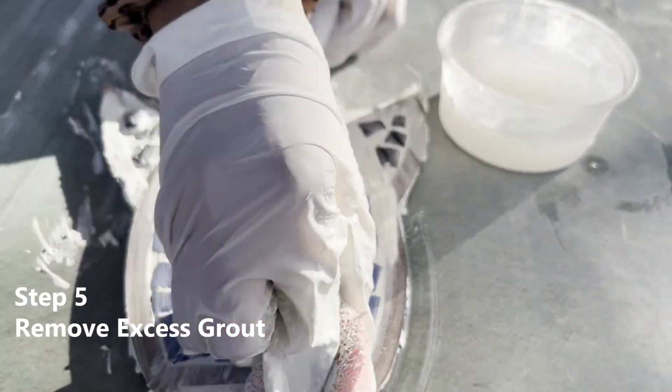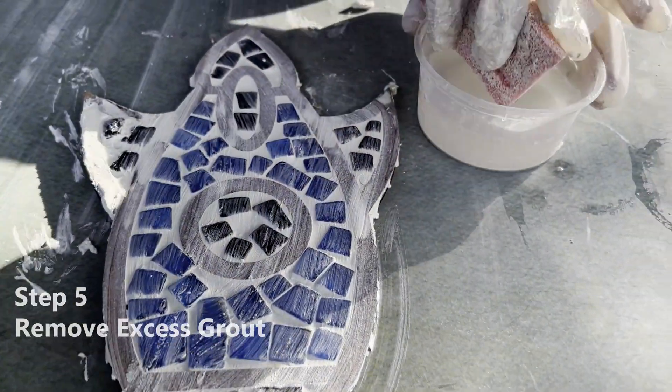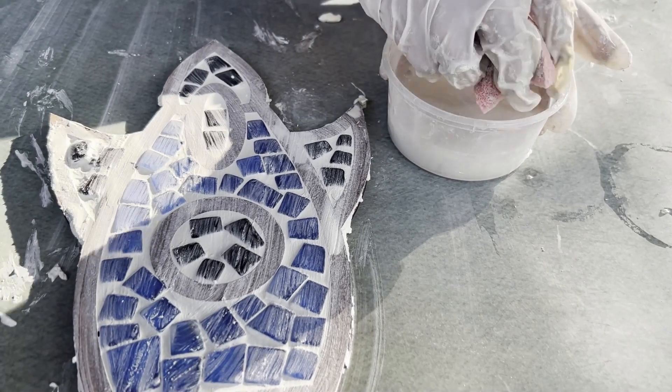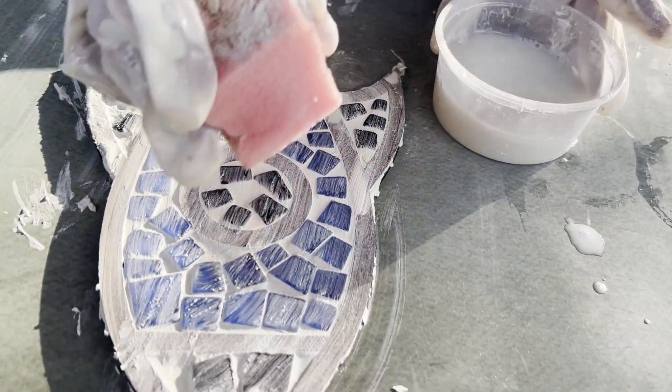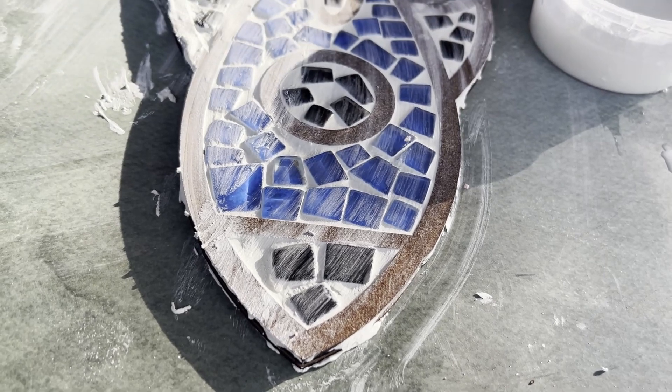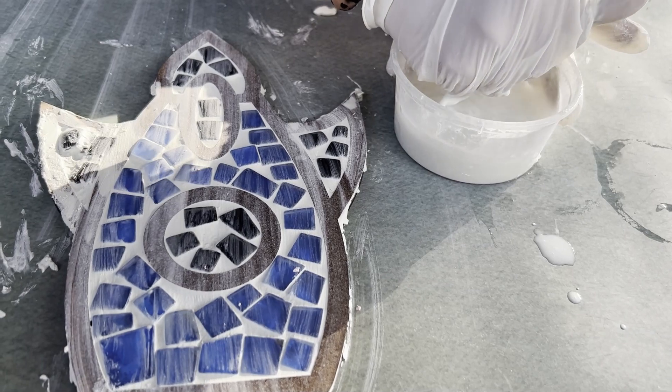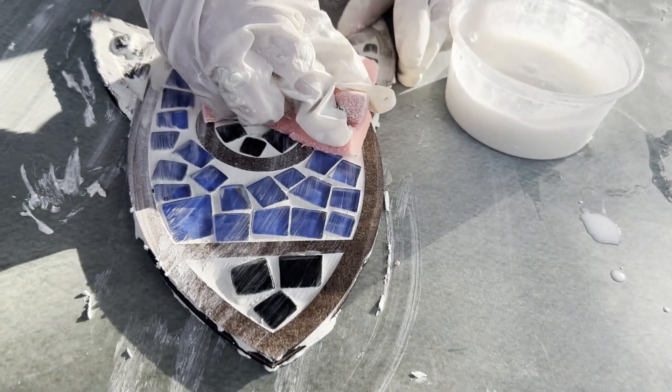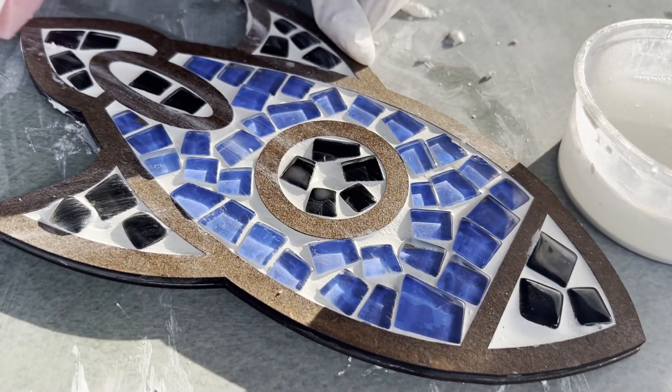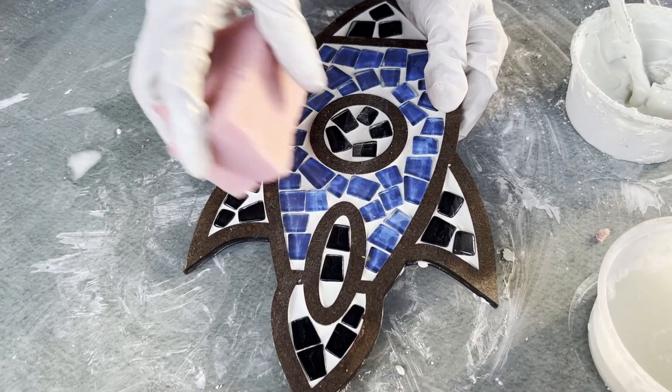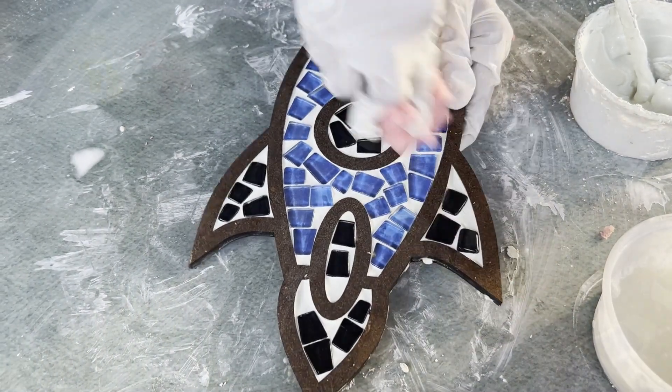After each wipe, rinse the sponge thoroughly to keep it clean before wiping away again. Wait for the grout to set slightly for about 15 to 20 minutes but not fully harden, and once again wipe away excess grout from the surface of the tiles following the same process.